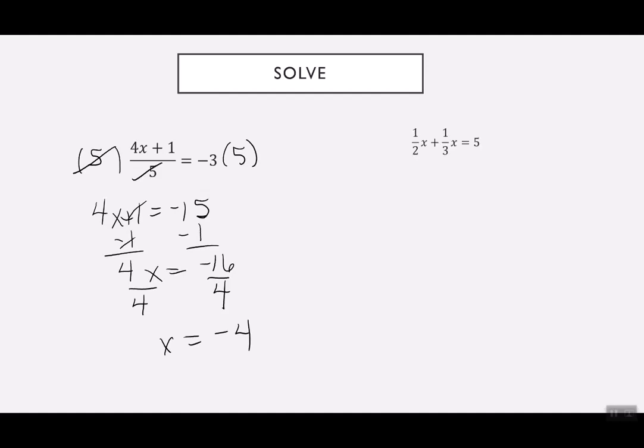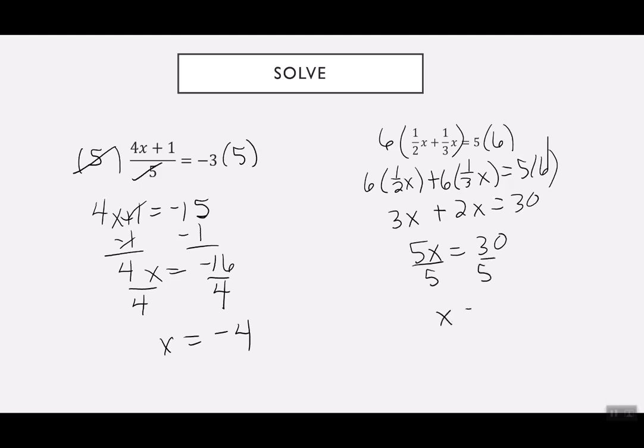Here's one with two fractions. I have 1 half of x and 1 third of x equals 5. I need to get rid of the 2 from the 1 half and the 3 from the 1 third. If I'm going to multiply by 2 and multiply by 3, that says we can multiply by 6. So I'm going to do 6 times 1 half of x, 6 times 1 third of x, and then 6 times 5. Half of 6 is 3, so I have 3x. A third of 6 is 2, I have 2x. 5 times 6 is 30. I'm going to add the 3x and the 2x. 3x and 2x is 5x. That's 30. And then I want to divide by 5. That tells me x is equal to 6.